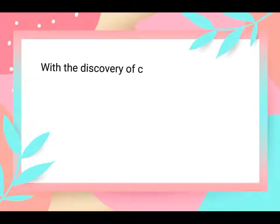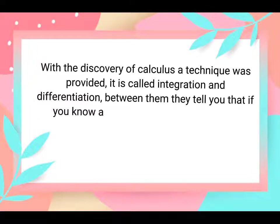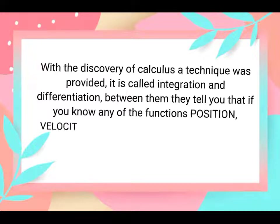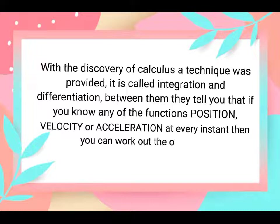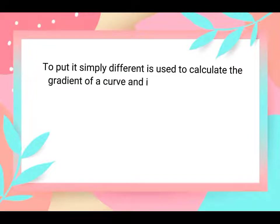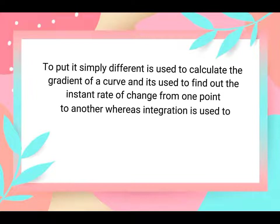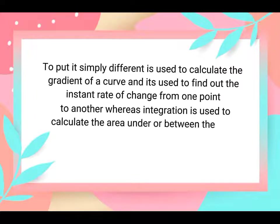With the discovery of calculus, a technique was provided called integration and differentiation. Between them, they tell you that if you know any of the functions — position, velocity, or acceleration — at every instant, then you can work out the other two. Differentiation is used to calculate the gradient of a curve and find the instantaneous rate of change from one point to another, whereas integration is used to calculate the area under or between curves.